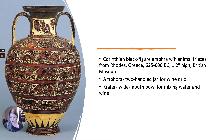We talked a little about the orientalizing style. 'Oriental' is not a word you use for people, but in art history this particular style is called orientalizing — it's not a negative connotation. It simply means using motifs from the Near East in vase painting in Greece.